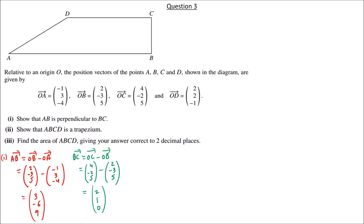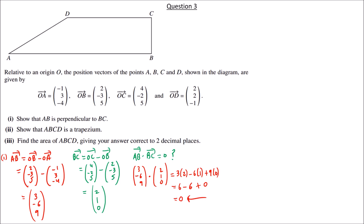Since the dot product equals zero, AB and BC are perpendicular. Part 2: Show that ABCD is a trapezium. A trapezium is a quadrilateral with one pair of opposite sides parallel.